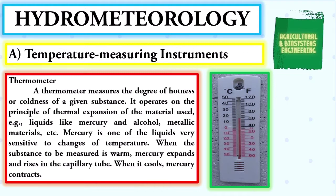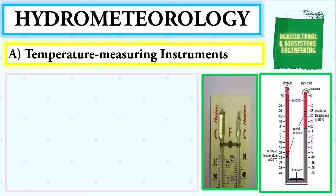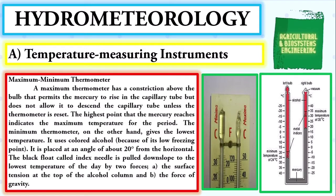Examples of materials used are liquids like mercury and alcohol, and metallic materials. Mercury is one of the liquids very sensitive to changes of temperature. When the substance to be measured is warm, mercury expands and rises in the capillary tube; when it cools, mercury contracts.